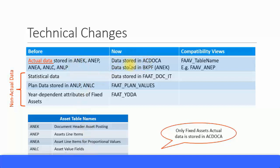Going forward, all line item values are now stored in the AKDOCA table — this is the universal journal entry table. The header information is still stored in the BKPF table, so all information from ANEK is still stored in BKPF, and the rest of the line item information is stored in AKDOCA.